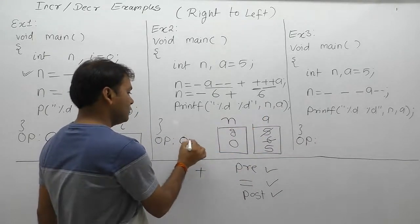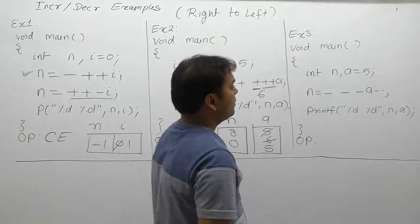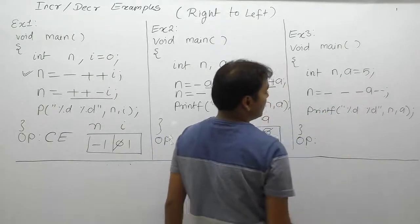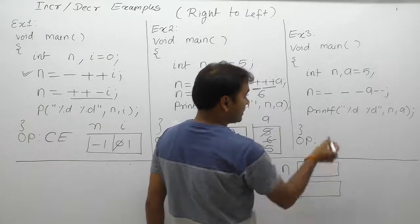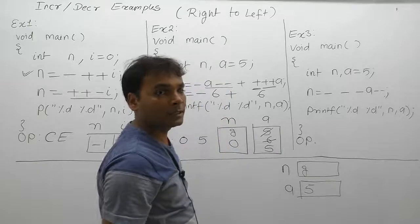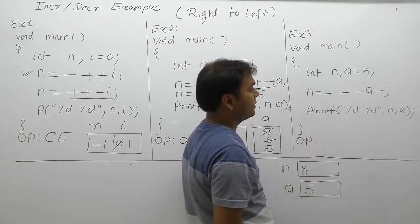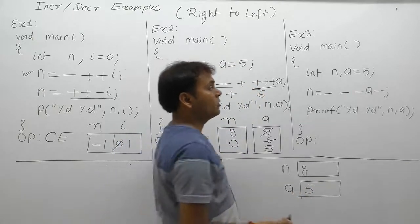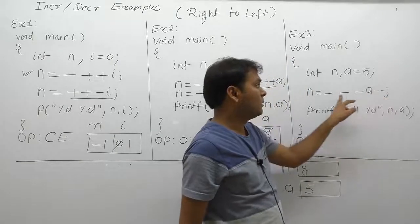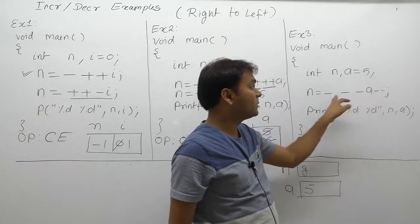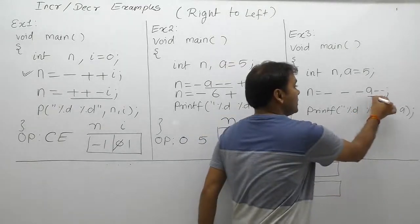Next example — almost the same case. There are two variables: n and a. Initial value of a is 5, initial value of n is garbage. In this expression, unary minus operators are separated by spaces, so they are considered as unary minus, not decrement. But where minus-minus occurs continuously, it is post-decrement.